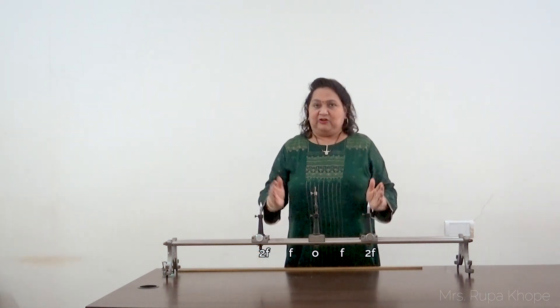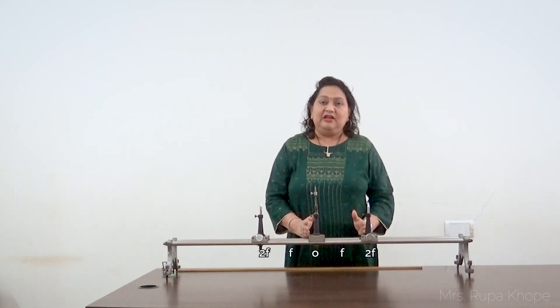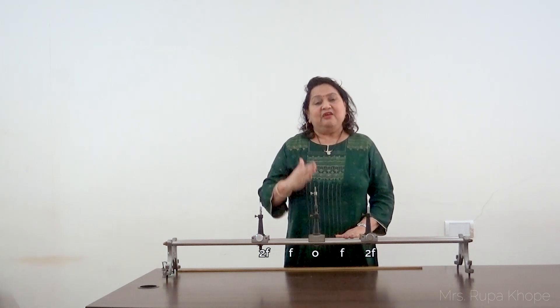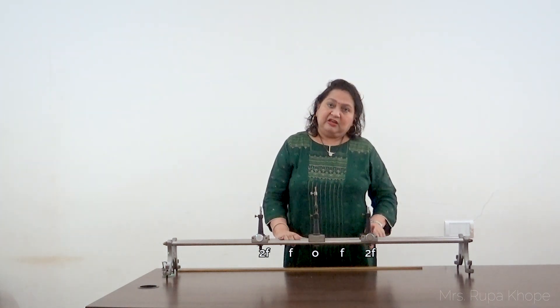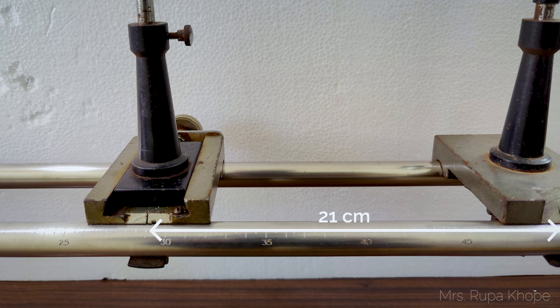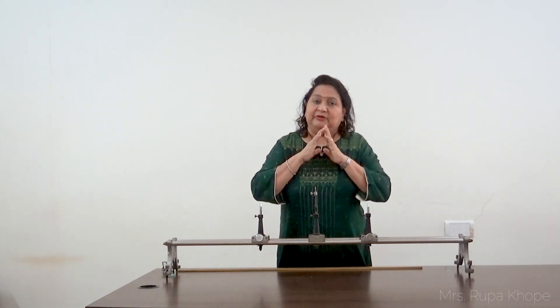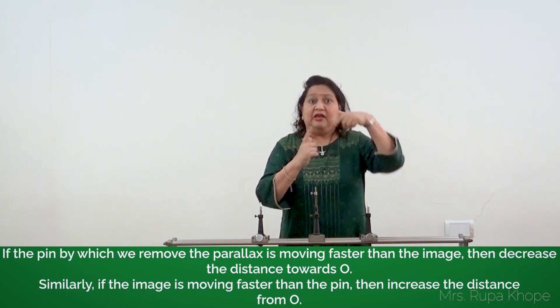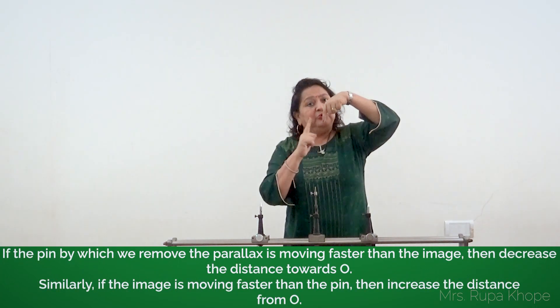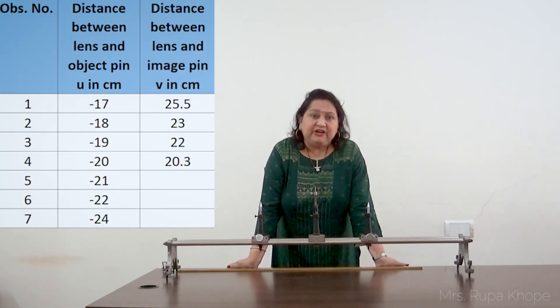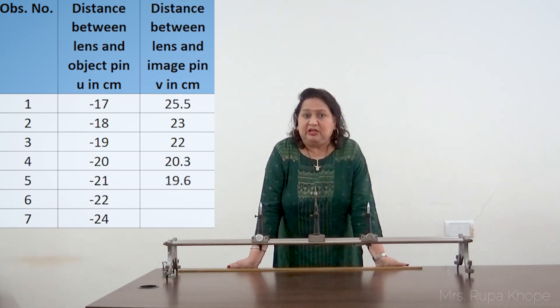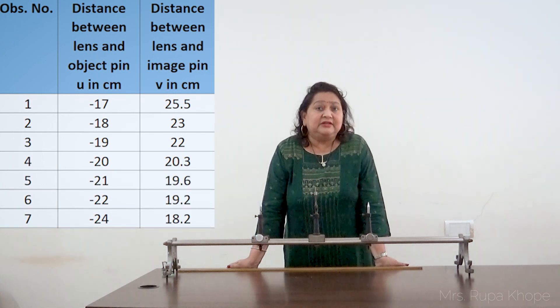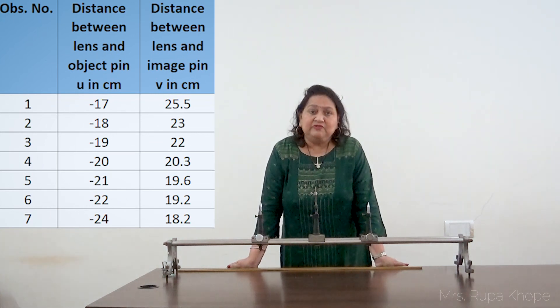Now we are going to the second part of the experiment — keeping the object beyond 2f, that is at 21 cm. Again go to the other side and remove the parallax. Once you know how to remove the parallax, you have won the battle. If you find that the image is moving faster, you need to increase the distance. We take 7 to 8 readings of object distance and image distance. Note that the object distance is written with a negative sign because of sign convention.